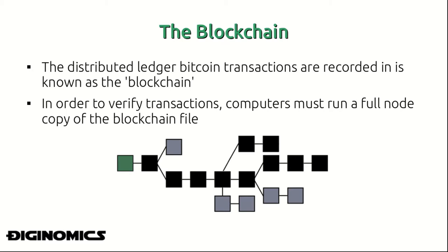This file is known as the blockchain, and it is a cryptographic chain of blocks which are being mined. In order to verify these transactions, computers are said to run a full node — a machine which houses a full copy, updated in real time and synchronized with the Bitcoin network. If you look at the diagram at the bottom, you'll see a proof-of-work chain of the blockchain protocol.